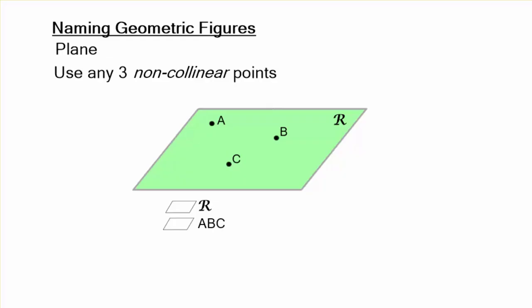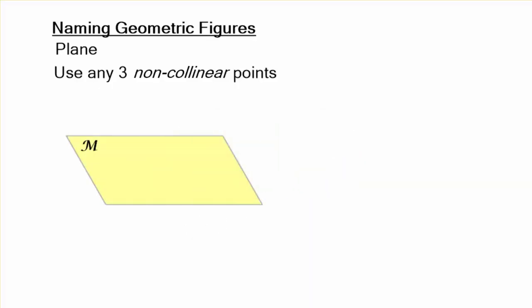But again, the order doesn't matter. It could be BAC or CBA, no big deal. Let's go ahead and try again. Now this plane could be named plane M, but it also has five little points on there. We're going to use those to go ahead and name it. Again, that's plane M.